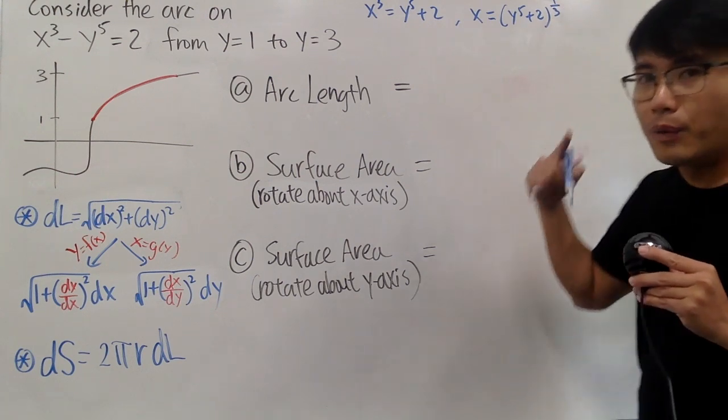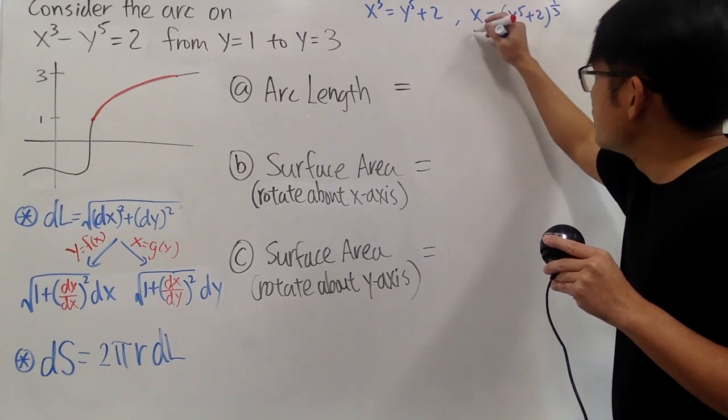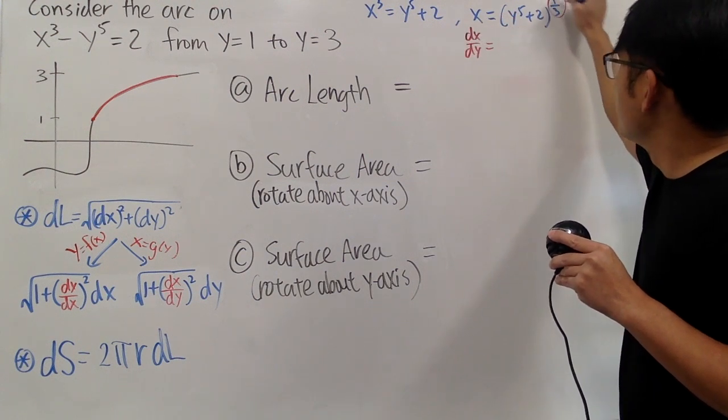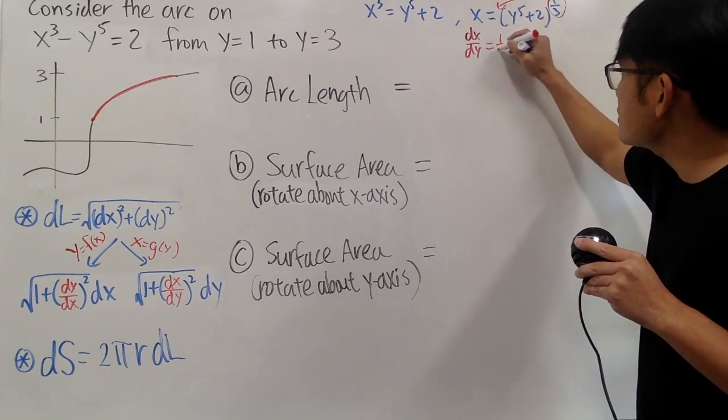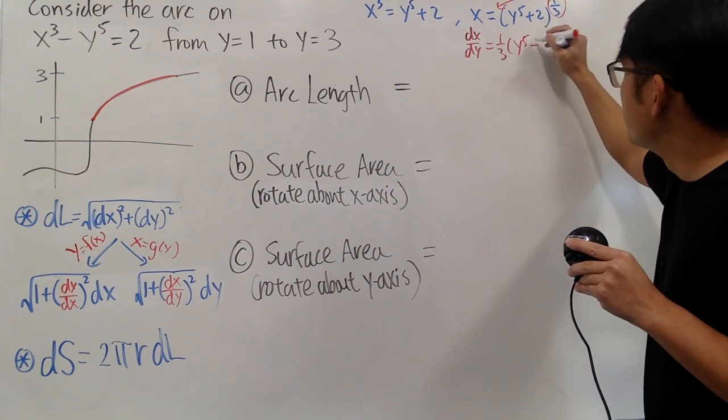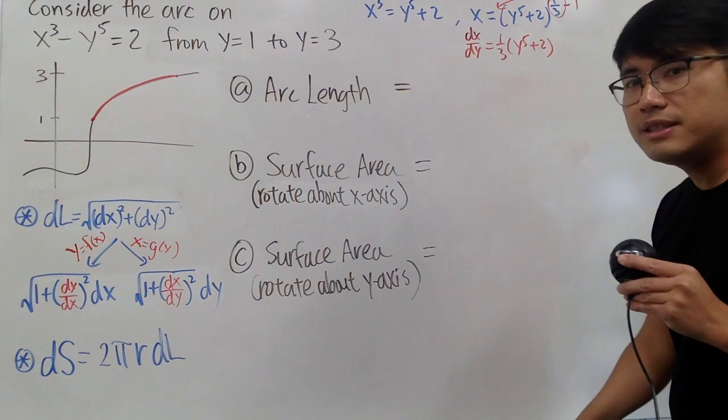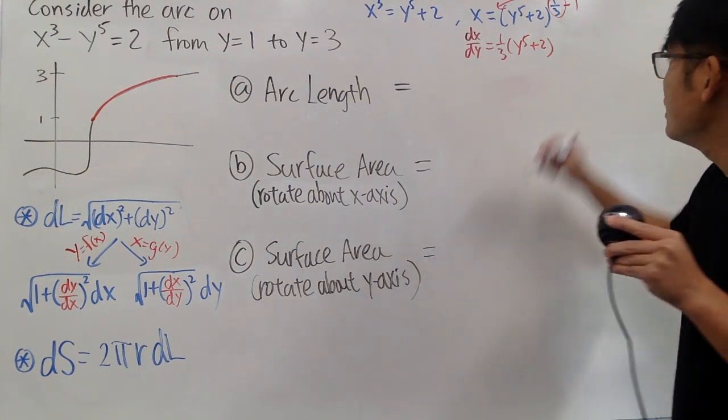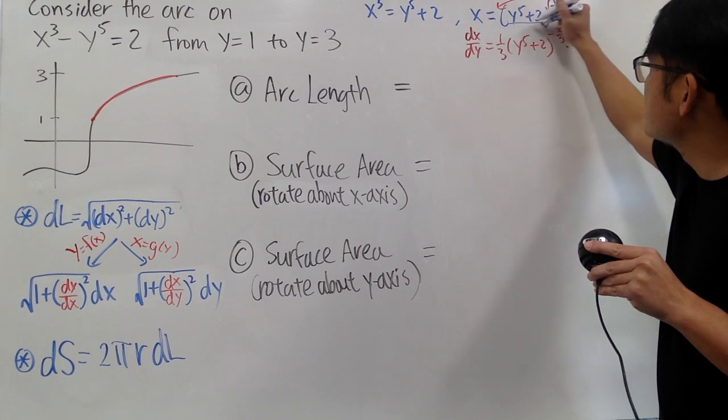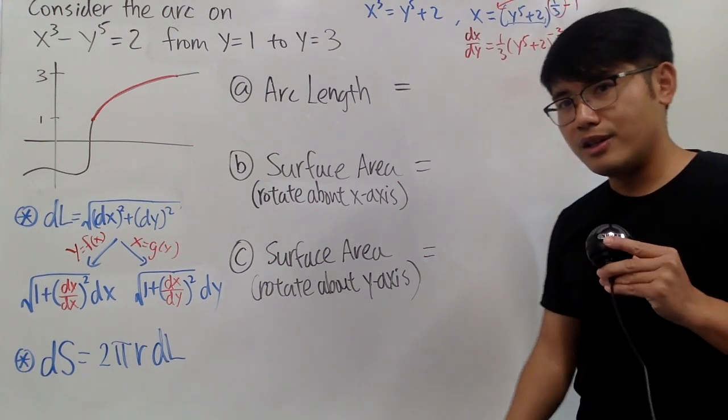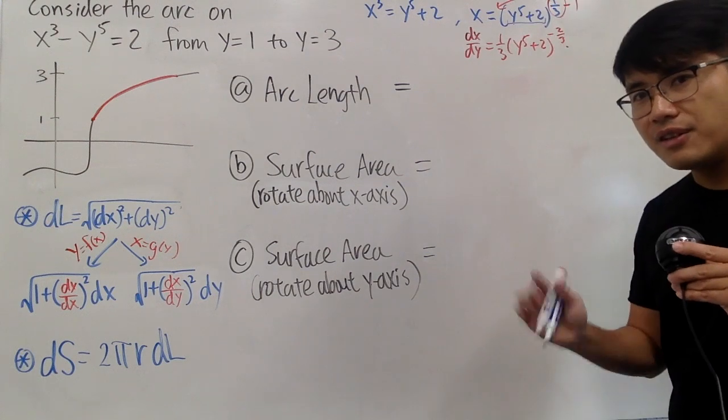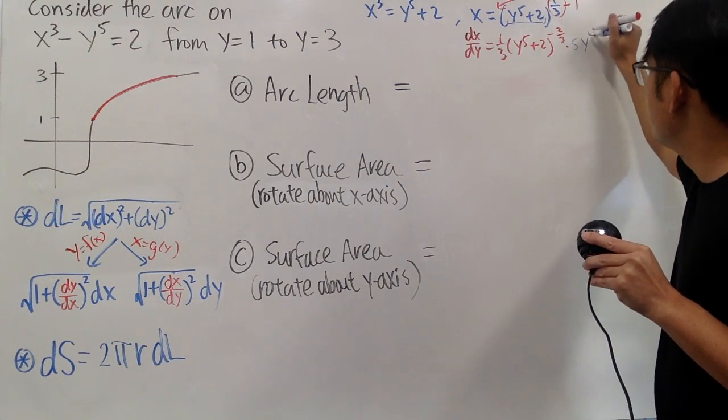Because we have to do our derivative, when we do our derivative by looking at this form, we get dx dy being, bring this to the front, so we have one-third, and the input stays the same, which is y to the fifth plus two, but don't forget to minus one to the exponent. One-third minus one is negative two-thirds, and we multiply by the derivative of the inside, because the chain rule. And the derivative of the inside is 5y to the fourth power, so just multiply by it right here.